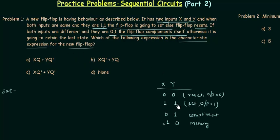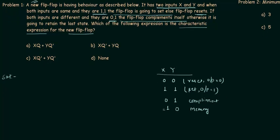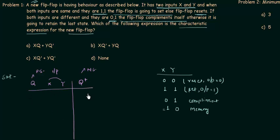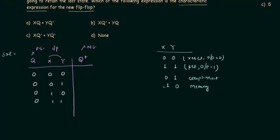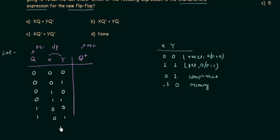We have all the information needed and must find the characteristic expression. Let's start by making the table. q is the present state, x and y are the two inputs, and q+ is the next state. We have three inputs and hence eight possible combinations: 000, 001, 010, 011, 100, 101, 110, and finally 111.